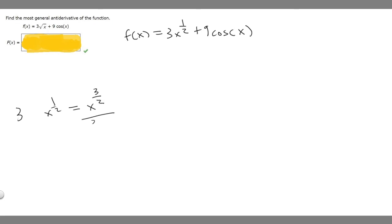When you divide by a fraction, you can just do the reciprocal of it. So this is basically the same thing as 2 over 3 times x to the 3 over 2.